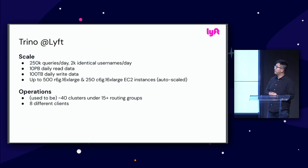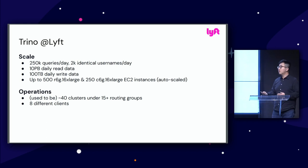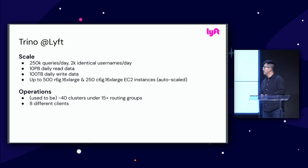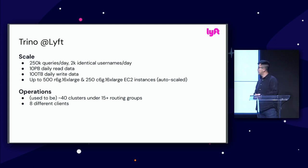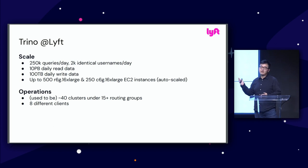As of last year at the same time, we probably had over a thousand such nodes to deal with the same or even less volume. So our new features this year are really helping us deal with more data with much less overall compute resource. We used to have over 40 clusters within 15 routing groups.